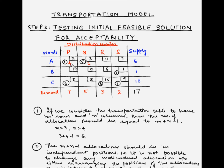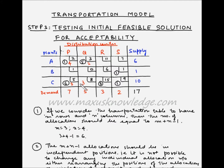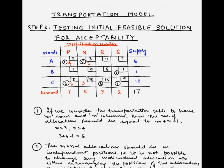Since we added 3 units to AP, the demand constraint for P is violated — allocations for P become 4 plus 6 equals 10. So we must reduce CP by 3 units, making it 3. Also, reducing AQ from 5 to 2 violates the demand constraint at Q, so we must allocate 3 units to cell CQ to balance supply at C and demand at Q. The demand and supply constraints are now met, but we had to allocate to cell CQ, which previously had no allocation.